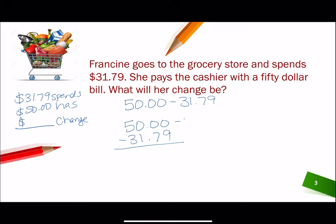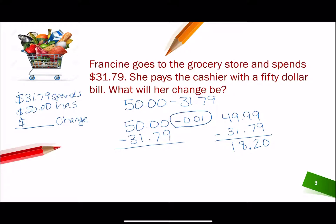I could take away one penny and make it $49.99, then subtract $31.79. 9 minus 9 is 0, 9 minus 7 is 2, don't forget to bring down your decimal, 9 minus 1 is 8, and 4 minus 3 is 1. But remember we have to add back in our penny — plus $0.01. So $18.20 plus $0.01 gives us $18.21.